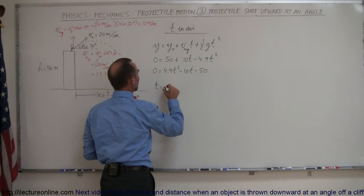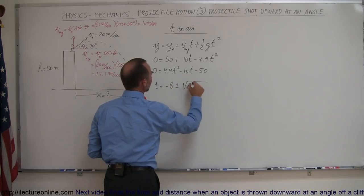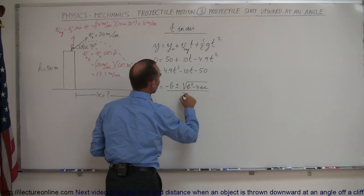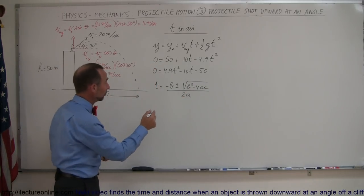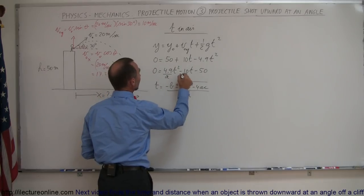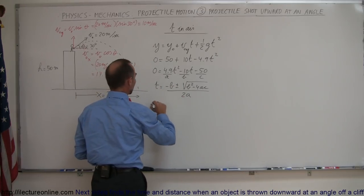I know that t is going to be minus b plus or minus the square root of b squared minus 4ac all divided by 2a. Of course a, b, and c are the coefficients of the three terms. This coefficient is a, this coefficient is b, this coefficient is c.